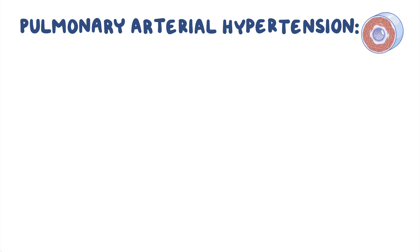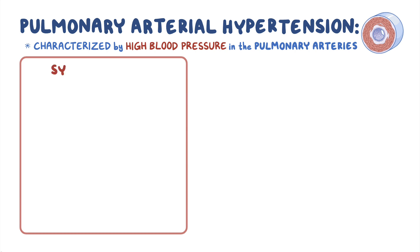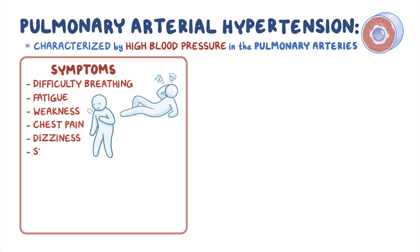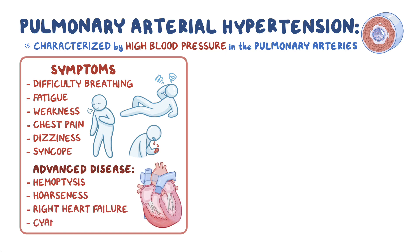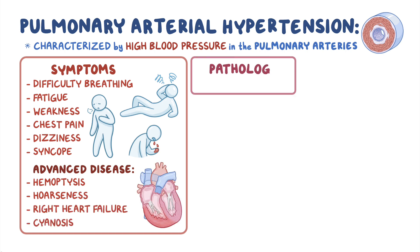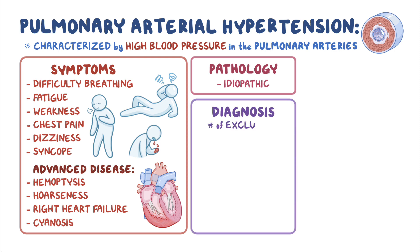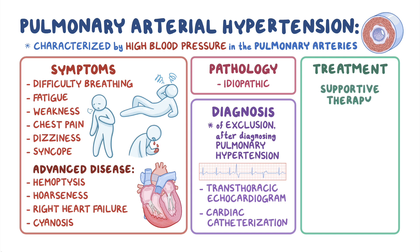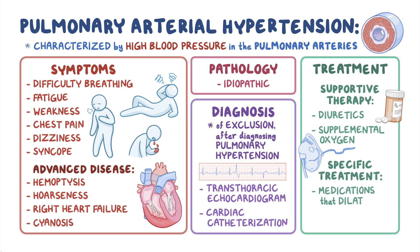As a quick recap, pulmonary arterial hypertension, or PAH, is a rare disorder characterized by high blood pressure in pulmonary arteries. Individuals with PAH experience symptoms like difficulty breathing, fatigue, weakness, chest pain, dizziness, and syncope. Advanced disease may present with hemoptysis, hoarseness, signs of right heart failure, and cyanosis. PAH is most often idiopathic and is a diagnosis of exclusion made after diagnosing pulmonary hypertension through transthoracic echocardiogram or cardiac catheterization. Treatment involves supportive therapy as needed, like diuretics and supplemental oxygen, and specific treatment with medications that dilate blood vessels.